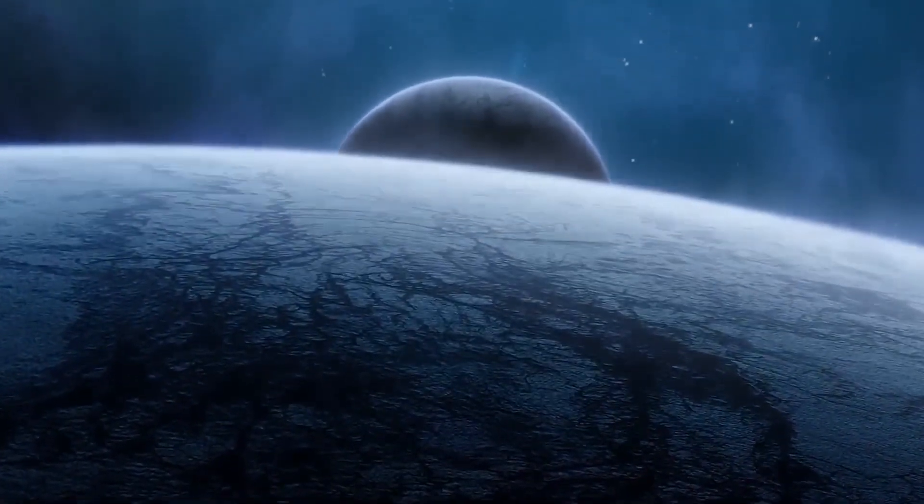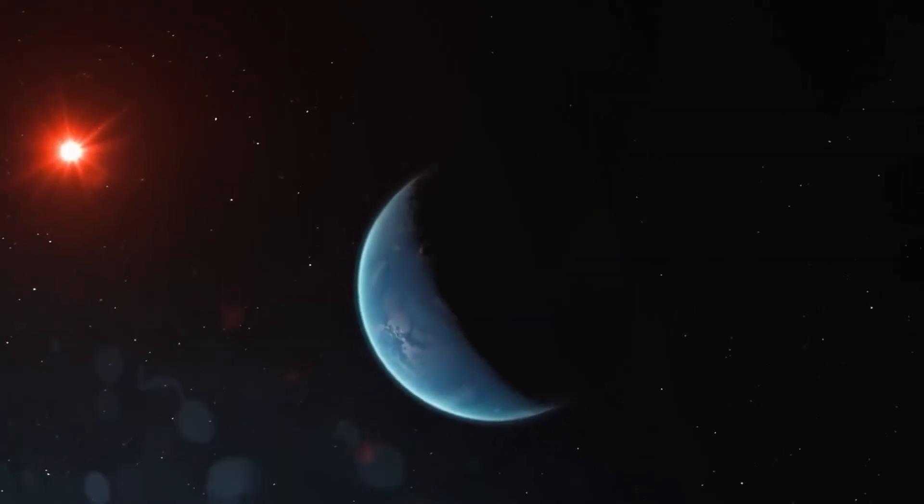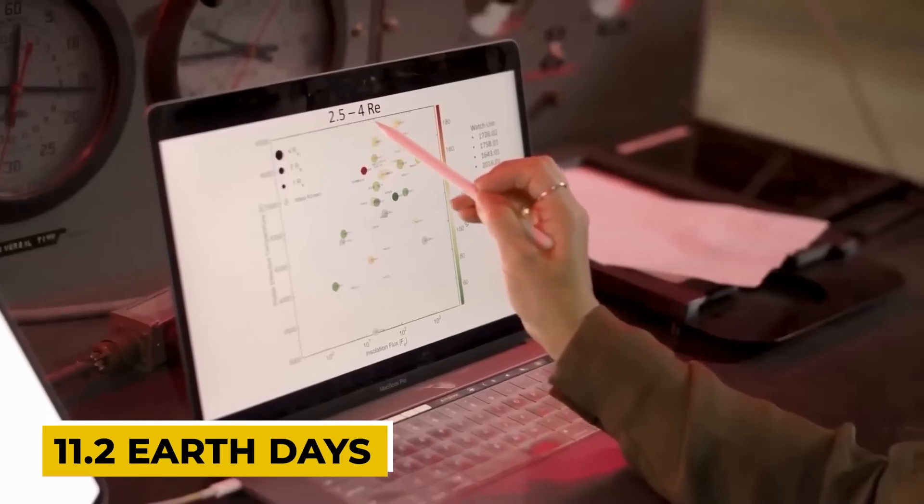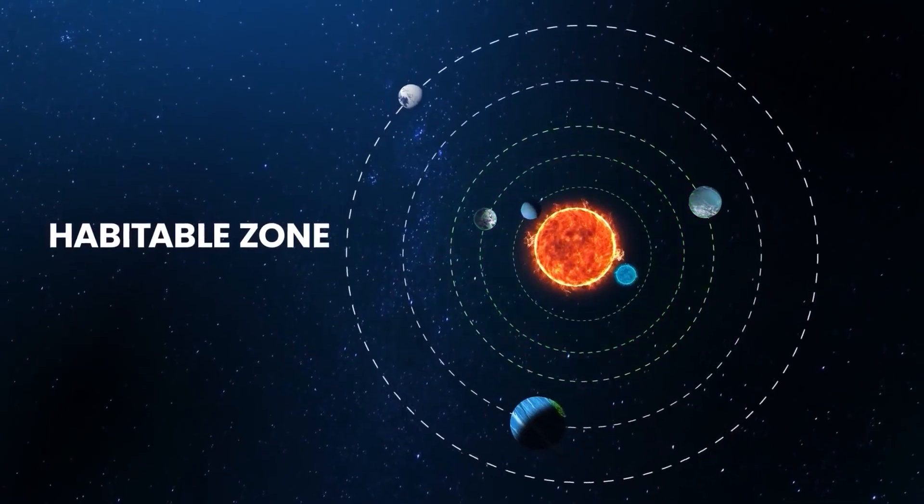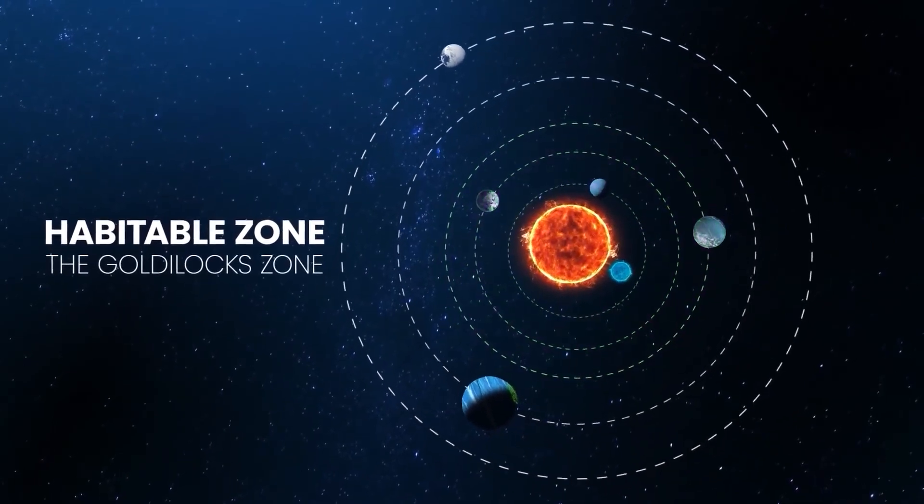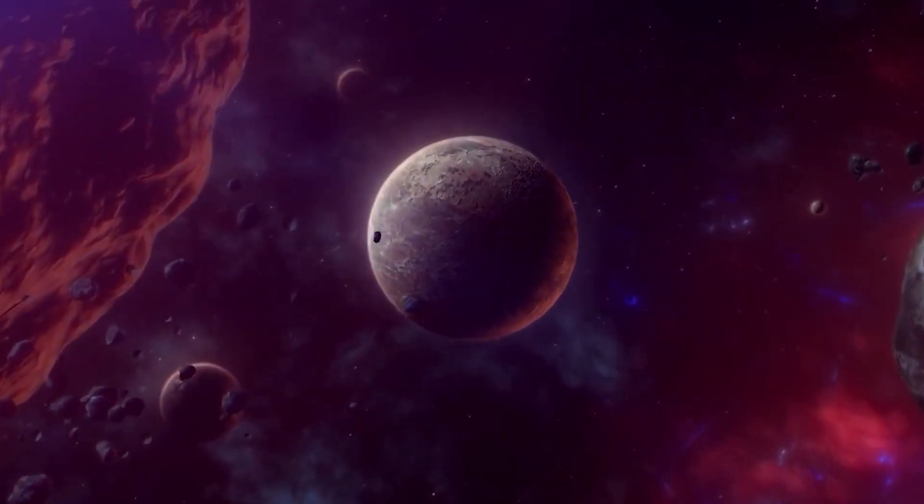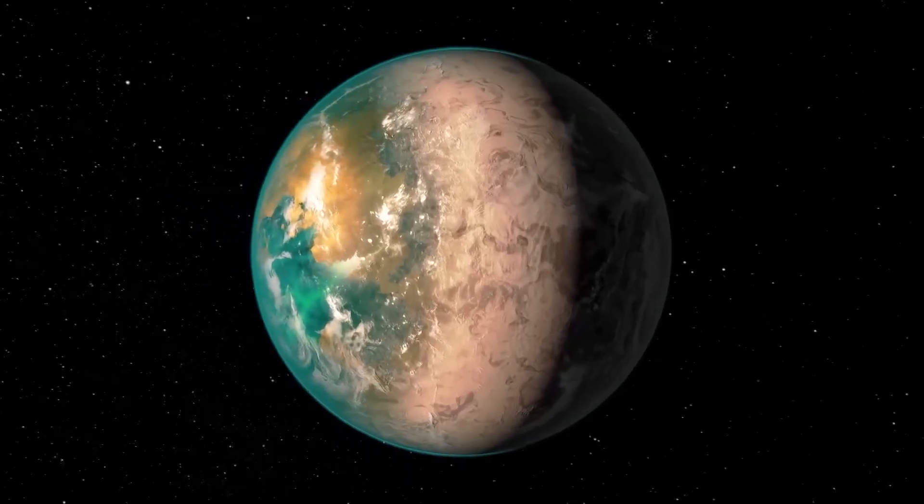Proxima Centauri b orbits its parent star in approximately 11.2 Earth days. This orbit is also within the habitable zone of its star, so its potential for sustaining life cannot be ignored.